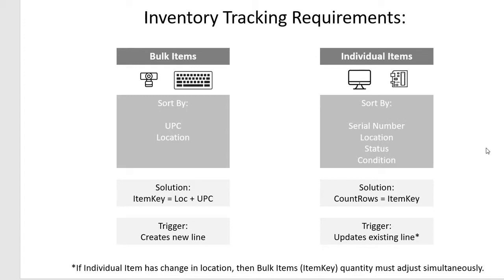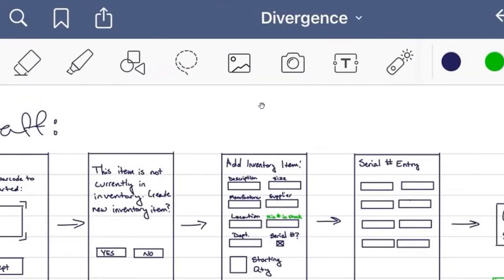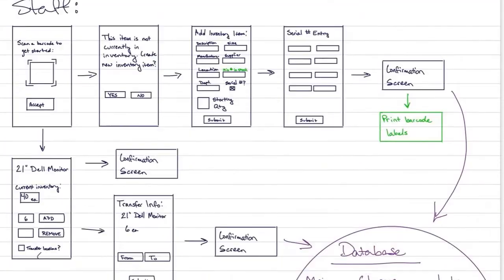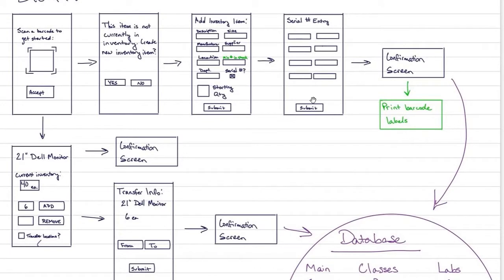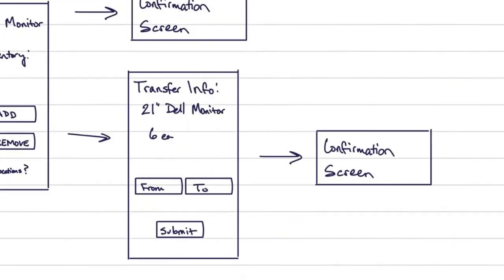We discovered we were tracking two different types of items: bulk items sorted by UPC and location, and individual items sorted by serial number. We were also tracking location, status, and condition. The challenge became how to put this kind of solution into an application and a database, and we answered that by developing the wireframe — deciding to have two different applications, one for staff and one for students.